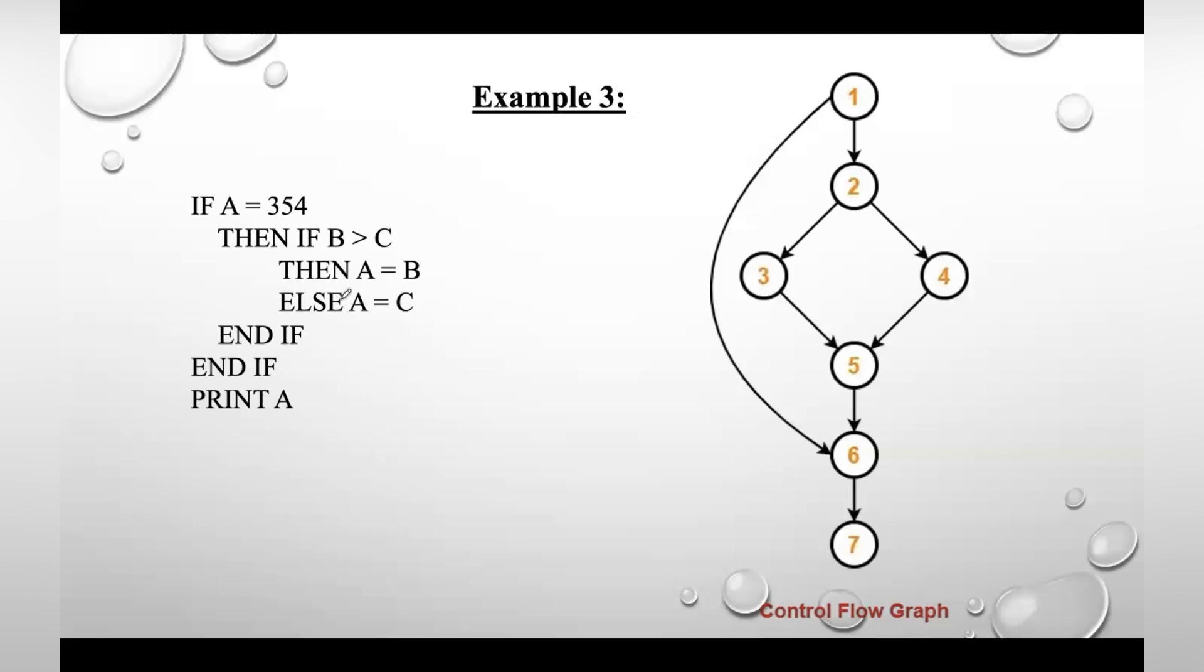Let us take one more example for basis path testing. This is a code given to us. Now we need to create a control flow graph in the first step, so first find out the total number of blocks here. You can start directly without using start and end, and you can just specify the block numbers instead of writing these things.